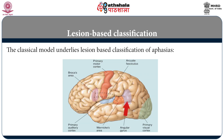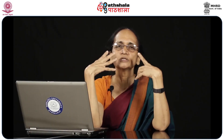You also have the angular gyrus, which is involved in reading and writing, and the primary visual cortex. Information from the environment travels via the parietal lobe and angular gyrus into Wernicke's area. Wernicke's area interprets the meaning and passes it on to Broca's area through the arcuate fasciculus. Broca's area then gives instructions to the motor cortex, which controls the lip, jaw, palate, and all the speech musculature involved in speech production.